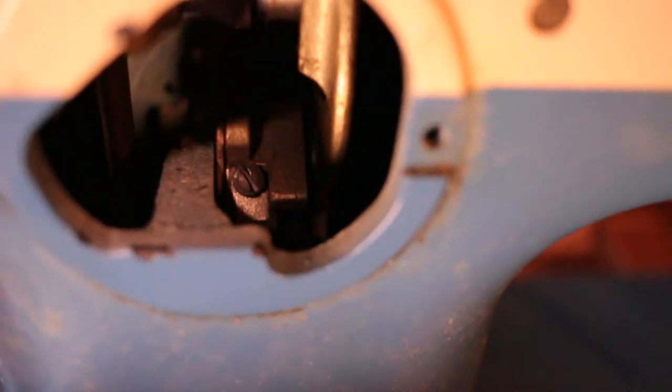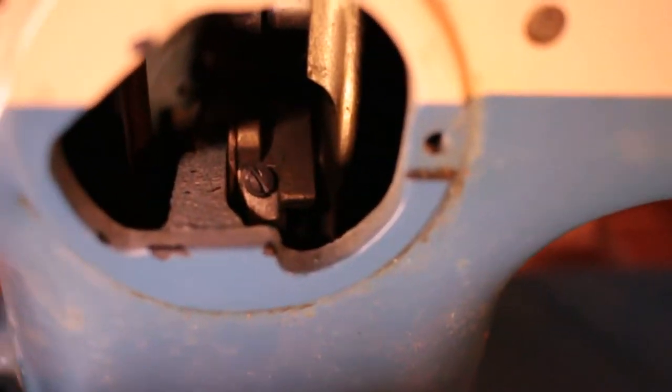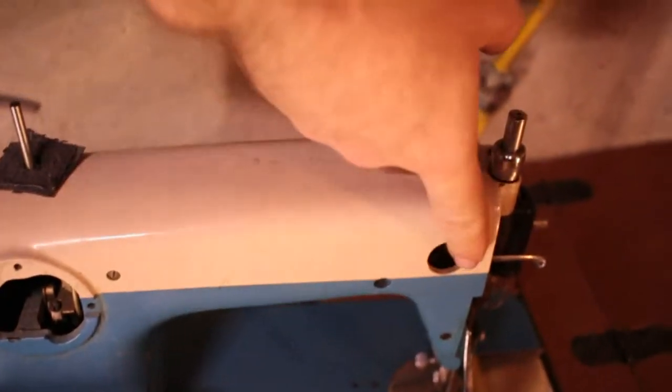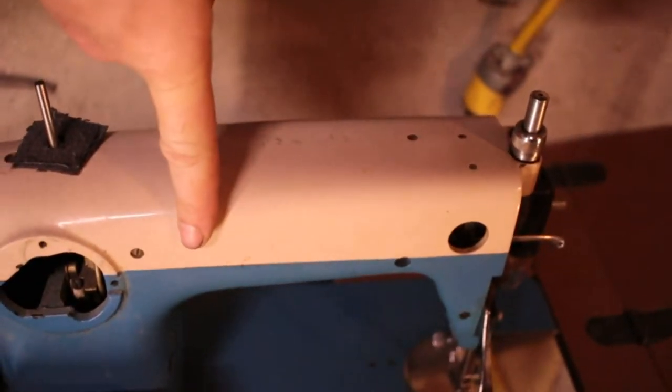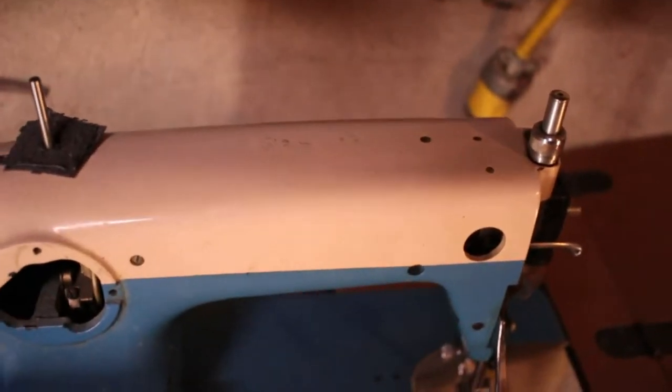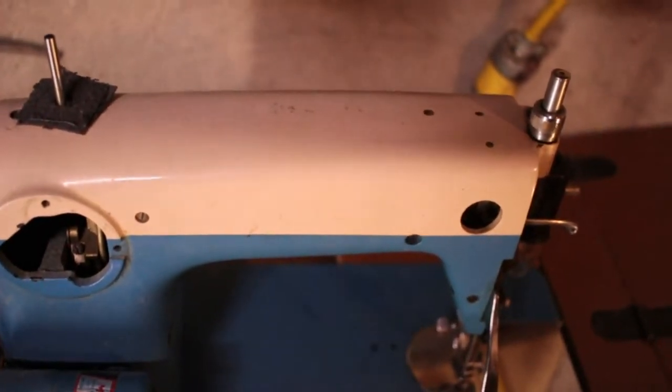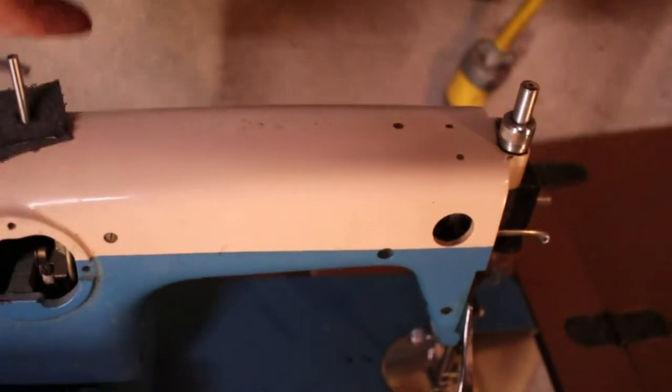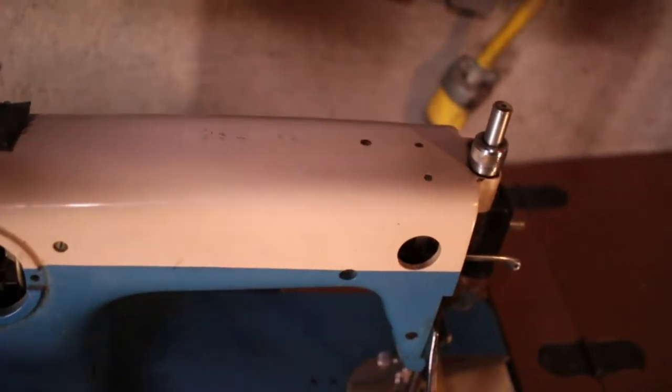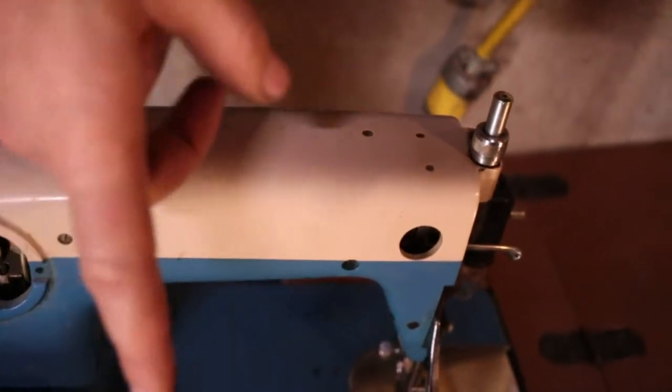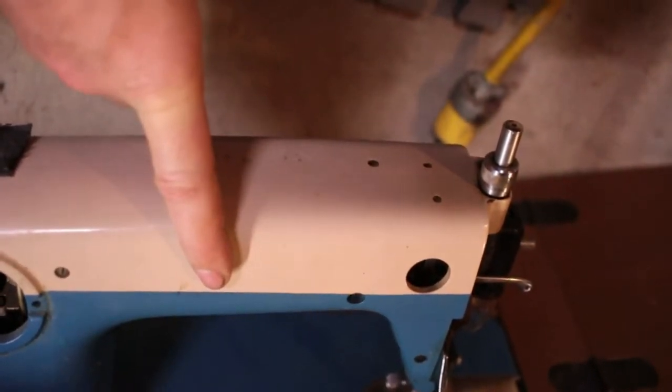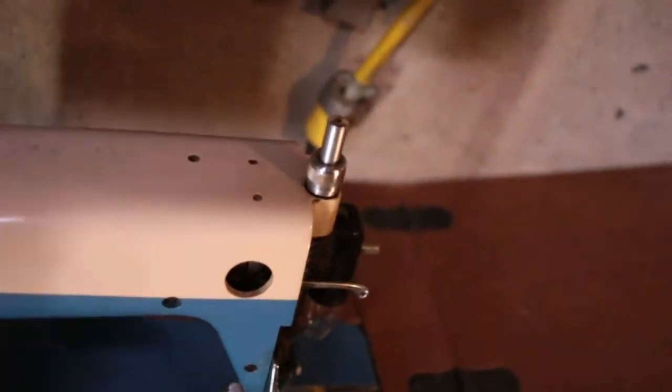So this whole tube is essentially empty on this machine. There's nothing in there in the upper part. And in fancier machines, that's where they'll put the cams to make them zigzag or all that stuff goes in here. But this machine doesn't have any of that stuff. So it's just a tube for that shaft to go through.